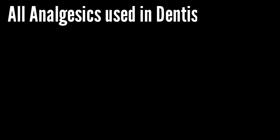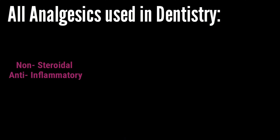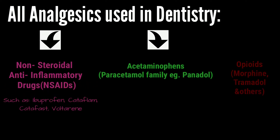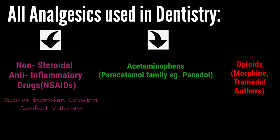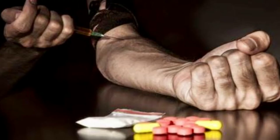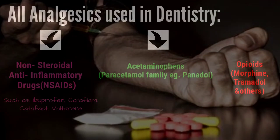There are three broad types of drugs used to control pain: the non-steroidal anti-inflammatory drugs, acetaminophen, and opioid analgesics. Opioid analgesics provide superior pain control; however, they are very addictive and are not prescribed commonly.